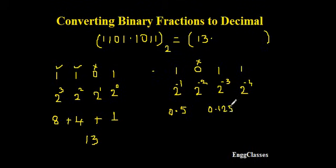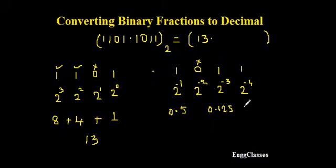Using a calculator, 1/8 turns out to be 0.125, so 0.125×1=0.125. Next is 2⁻⁴, which I can write as 1/2⁴=1/16, and 1/16 is 0.0625.